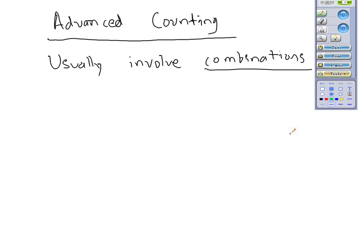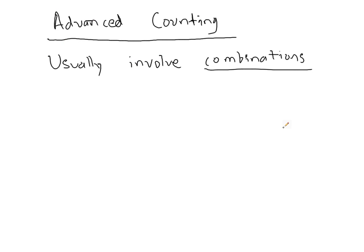What we want to focus on here are advanced counting techniques. These typically involve combinations, rarely permutations, because if order really mattered that much, we wouldn't be using these techniques.